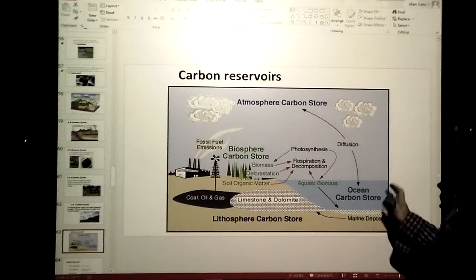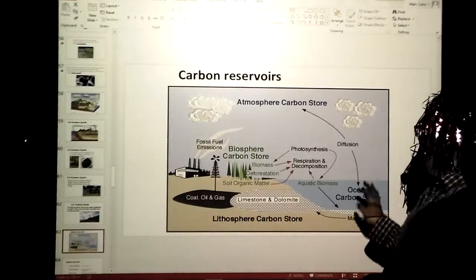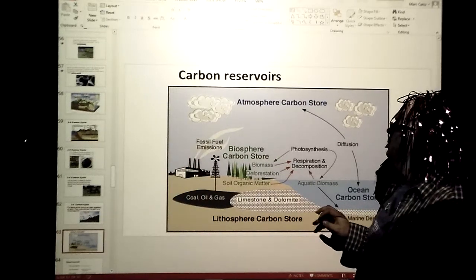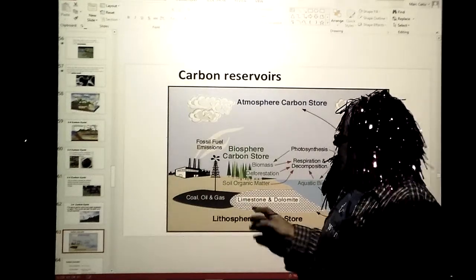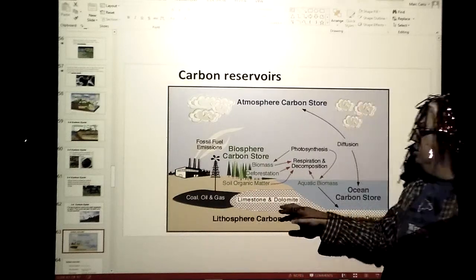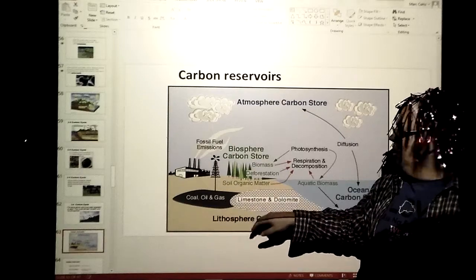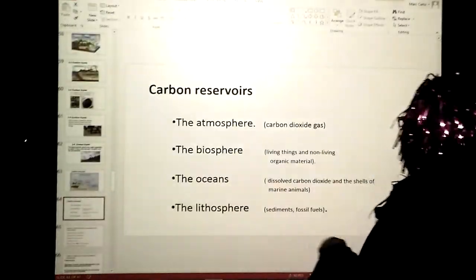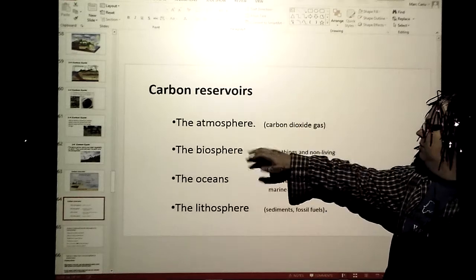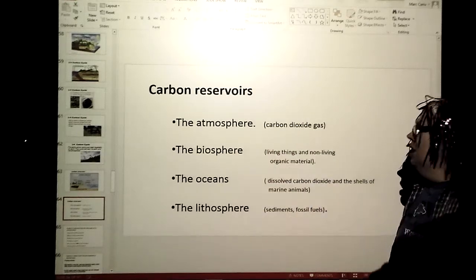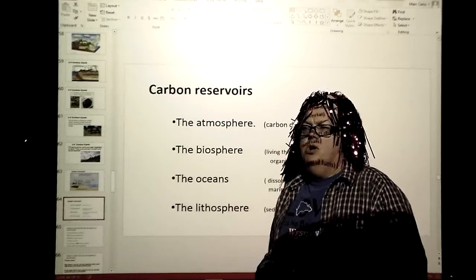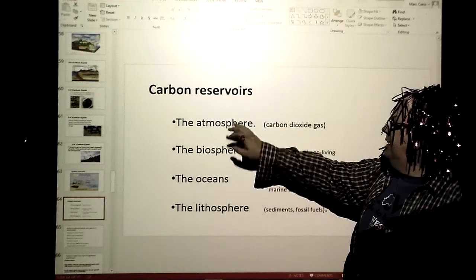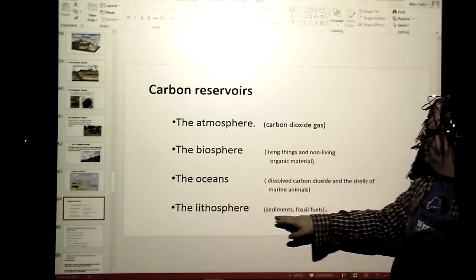When we look at carbon reservoirs, there's a number of them. We've talked about the ocean being a place where carbon can be stored, but the atmosphere is also storing carbon, notably in CO2. In the ground, the lithosphere, we can look at limestone and dolomite, and things like our fossil fuels like coal, oil, and gas. Think of a reservoir as a storage place where the carbon is going to be.